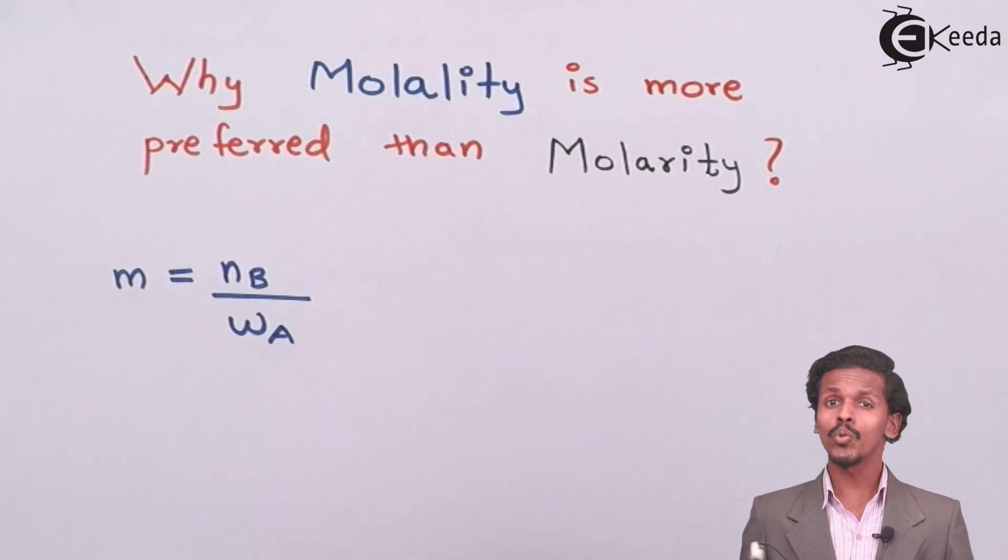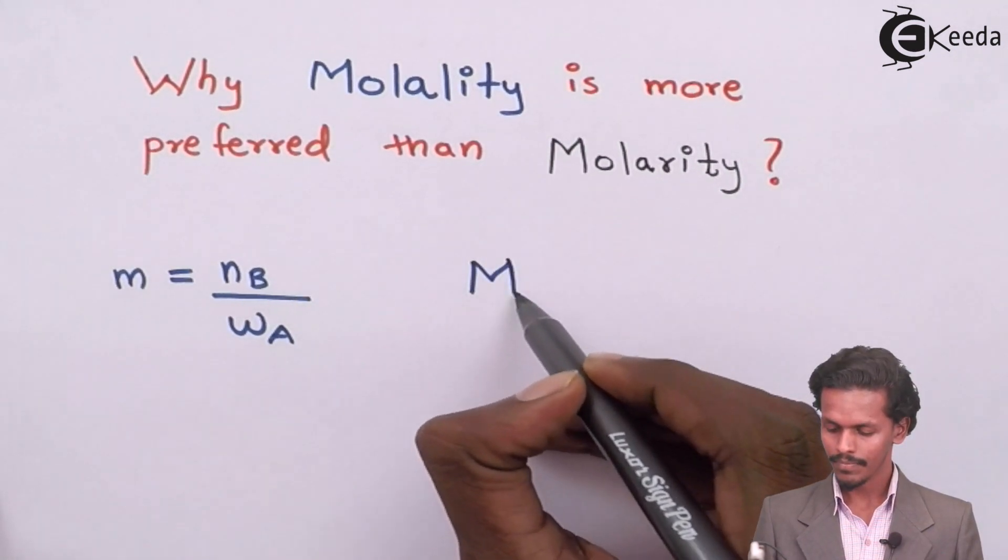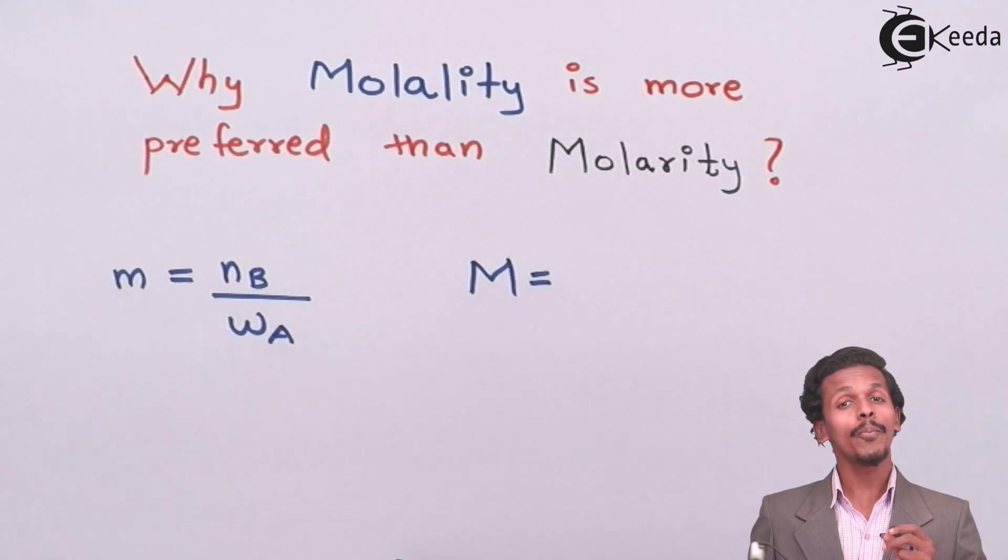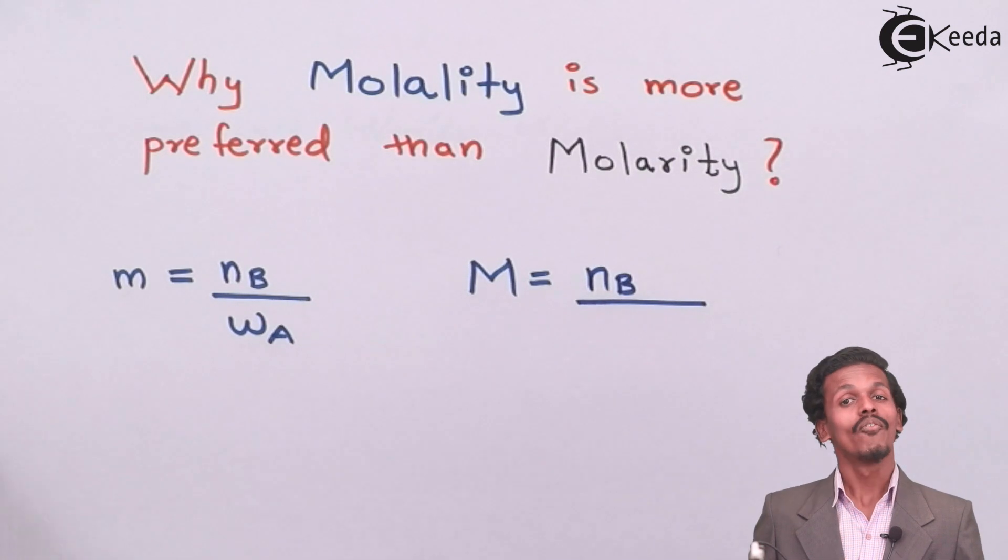When it comes to molarity, it has a symbol of capital M and has a formula: the number of moles of solute, that is n_B, dissolved in volume of solution in dm³.